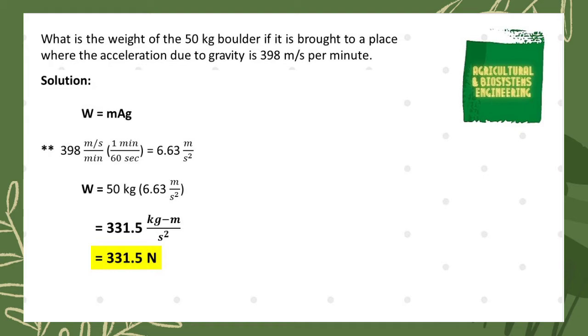We can now finally solve for our weight, which is the product of 50 kilograms multiplied to 6.63 meters per square second. Finally the product is 331.5 kilogram by meter per square second.